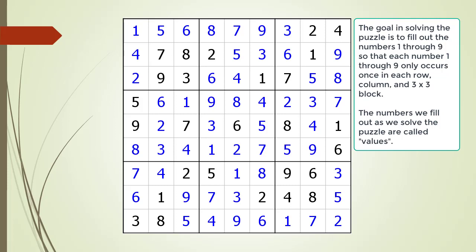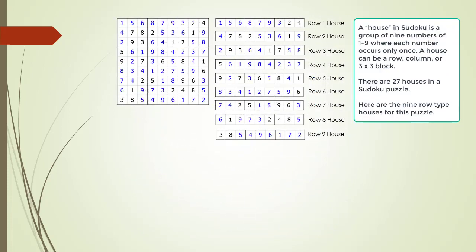The numbers we fill out as we solve the puzzle are called values, and the values we put in are colored in blue. Take a closer look at how the numbers occur in the puzzle. It is important to notice how each row, each column, and each 3x3 block has each number 1 through 9 only once. This 'only once' idea is key in coming up with logic to decide which value we should pick for a cell.